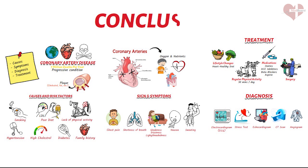Coronary artery disease is a serious condition that affects millions of people worldwide. It occurs when the arteries that supply blood to the heart become narrow or blocked, which can lead to chest pain, heart attack, and other complications. Fortunately, there are many ways to prevent and treat coronary artery disease. Making lifestyle changes such as eating a heart-healthy diet, getting regular exercise, quitting smoking, and managing stress can help reduce your risk. If diagnosed, your healthcare provider may recommend medications such as statins, ACE inhibitors, beta blockers, and aspirin to reduce your risk of complications. In some cases, surgical procedures such as angioplasty and stenting or coronary artery bypass surgery may also be necessary.